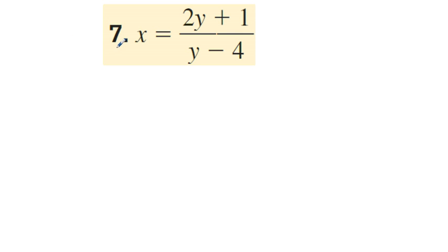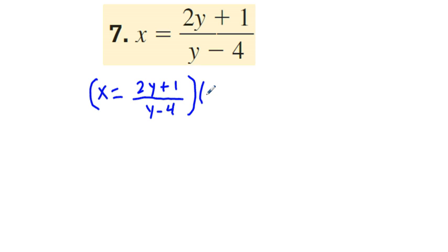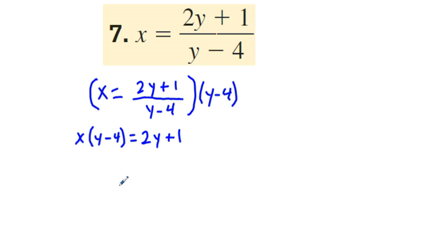The next one, problem 7, is similar in degree of difficulty to number 5. I'm going to rewrite this as x equals 2y plus 1 over y minus 4. Again, we're going to clear out our denominator by multiplying this equation by y minus 4. On the left side we have x times quantity y minus 4. On the right side, y minus 4 over y minus 4 cancels, so we have 2y plus 1.